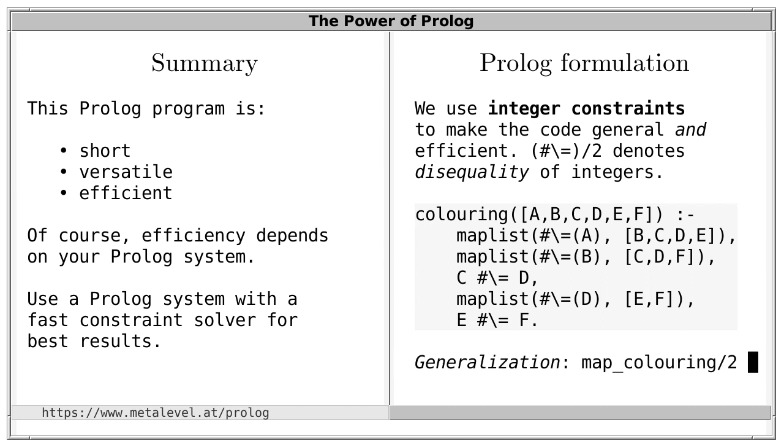However, we can of course generalize this definition and write a predicate such as map coloring, which takes, or generates, as its first argument, an arbitrary map in a suitable representation, so as a Prolog term, and relates that map to valid colorings of that given map. And in such more general cases, you can of course no longer fix the list length nor the disequality constraints beforehand. And I suggest you implement this generalization as a challenge. And while you are at it, you can also generalize this to graph coloring, which should work for arbitrary graphs and ideally also in all directions.